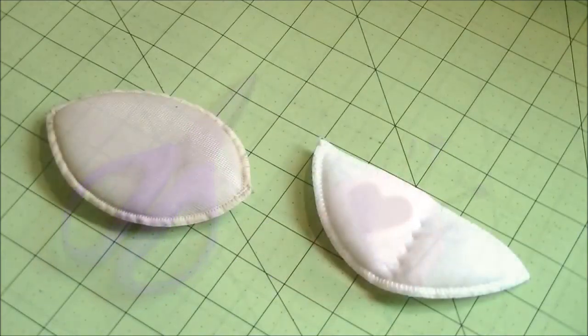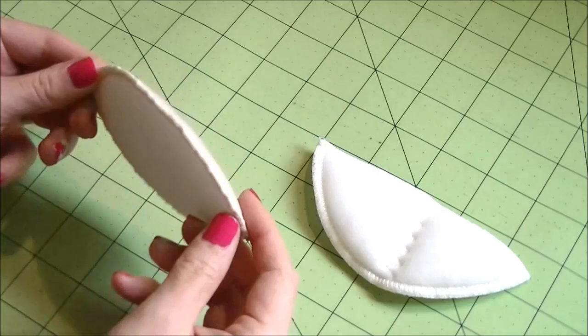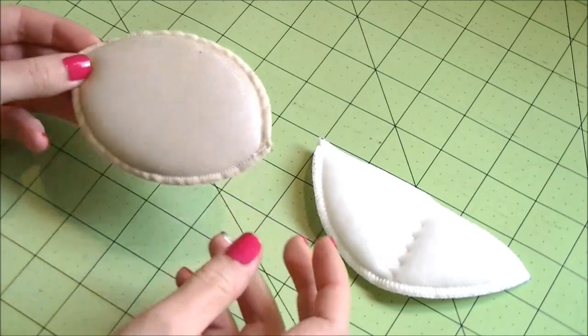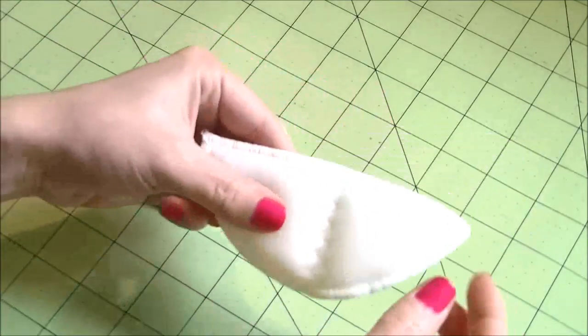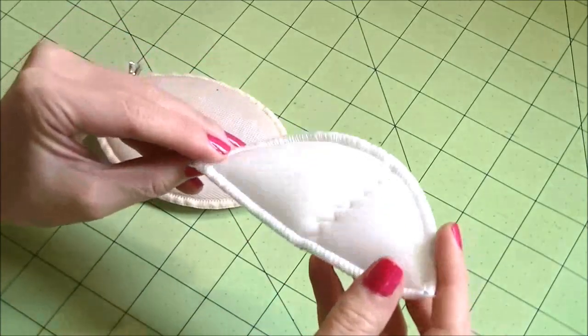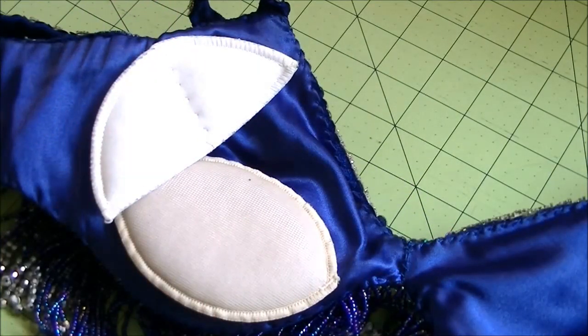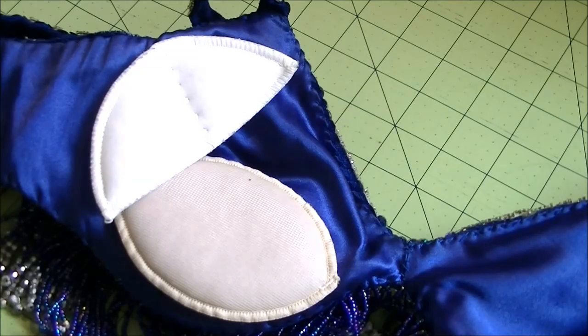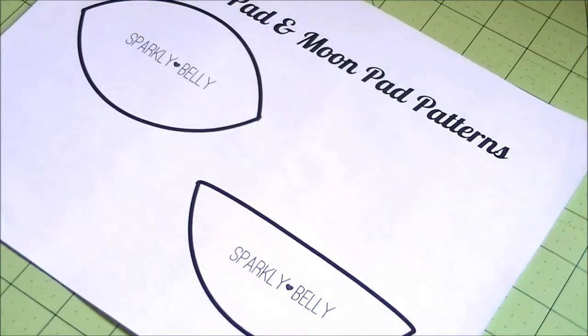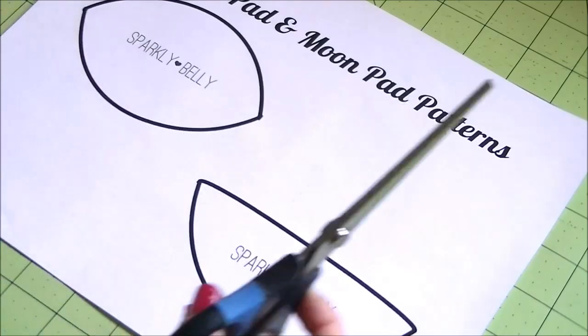You might be wondering why the lemon pads and moon pads. So this was inspired by bras I bought in Japan and they often come with either one type or both types of these pads. The lemon shaped ones go at the bottom of the bra cups to give your girls a lift. And the moon shaped ones go against the sides to give your girls support from the side. And by making these yourself, you can stuff as much or as little as you like.